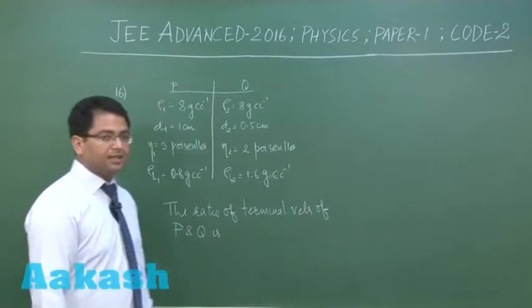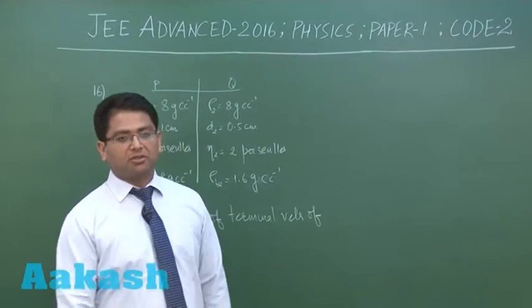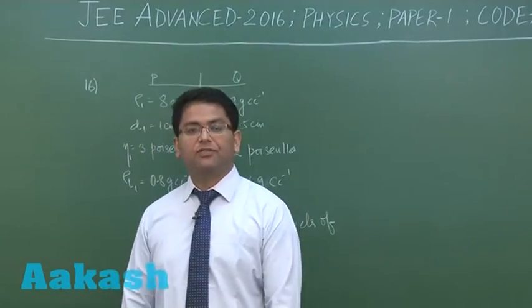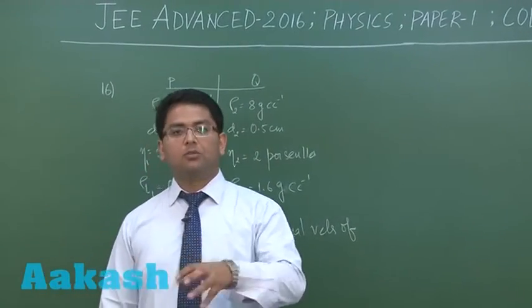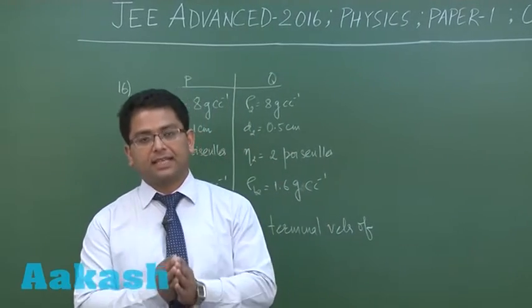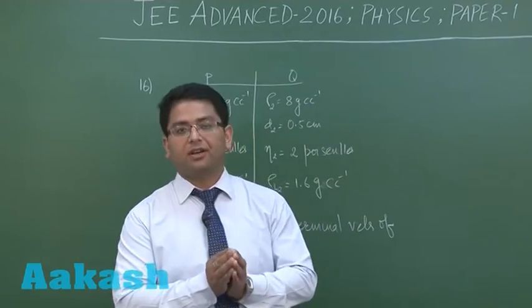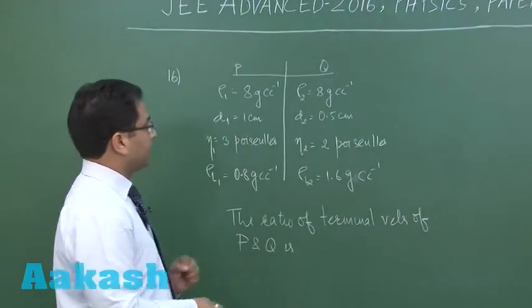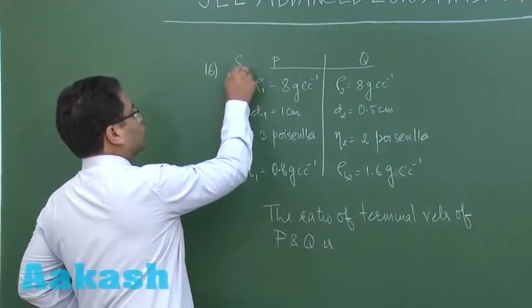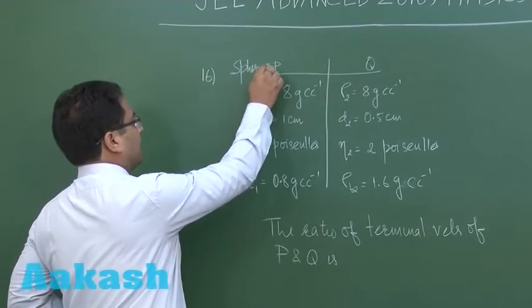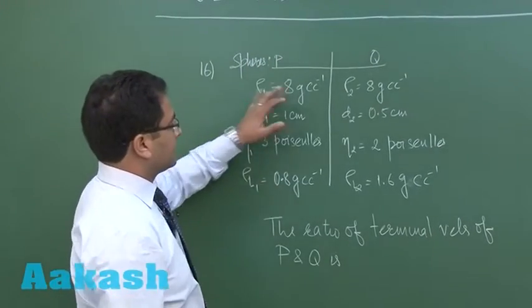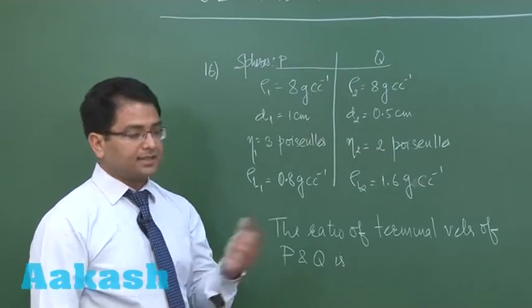Question number 16 is a direct formula-based question that has been derived from hydrodynamics, and more specifically from the topic of viscosity, wherein terminal velocity has been put here. There are two spheres P and Q, and these are the density of the spheres. They are the same.